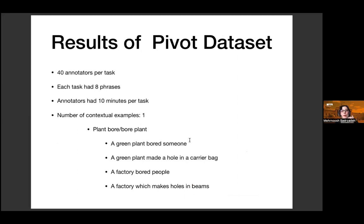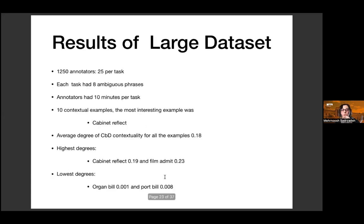We found one contextual example: the phrase 'plant bore / bore plant.' A green potted plant can bore someone; a factory boring people with its news; or a factory whose job is putting holes in beams — that last one is very realistic. For the large dataset of 1,250 annotators, we found 10 contextual examples. The most interesting was 'cabinet reflects' — a piece of furniture reflecting light, or a group of MPs bearing a thought.